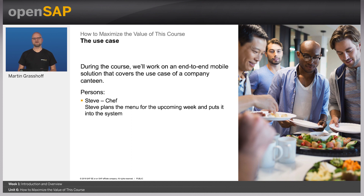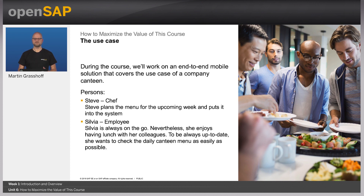In our use case, we have two personas. One is Steve. Steve is the chef. He plans the menu for the upcoming days and weeks and puts it into the system using a mobile application. On the consumer part, we have Sylvia. Sylvia enjoys the food she gets during her lunch and she wants to be up to date with what's in the canteen for today and for tomorrow, so she uses a mobile application.